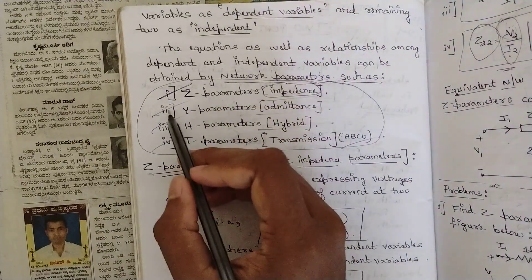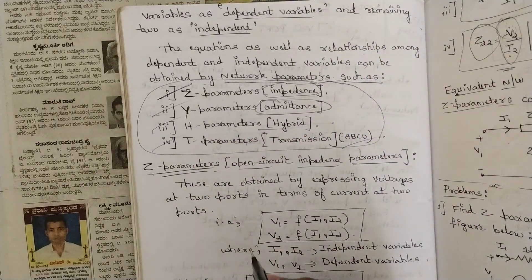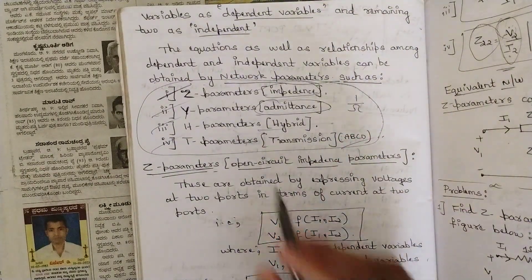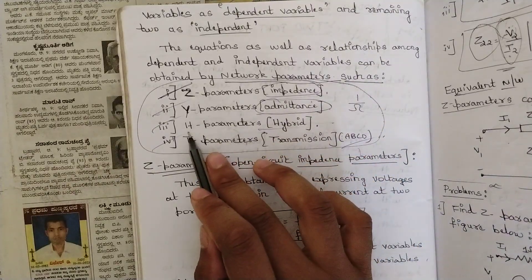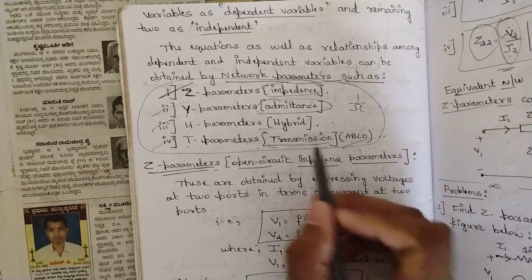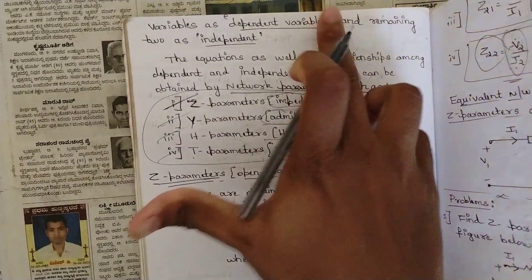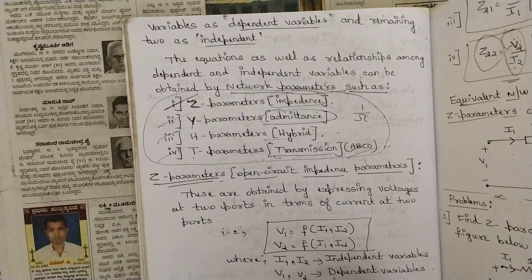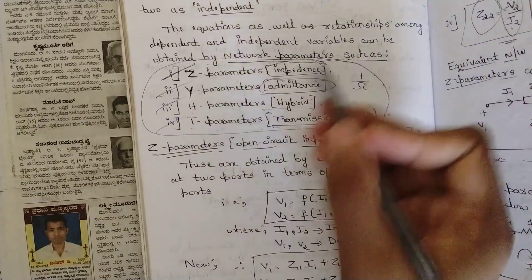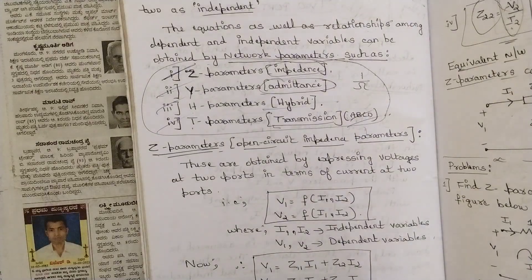The four parameters are: Z parameters, also called impedance parameters; Y parameters, also called admittance parameters — admittance is the reciprocal of resistance; H parameters, also called hybrid parameters; and T parameters, also called transmission parameters or ABCD parameters. The dependent and independent variables are interlinked forming particular relationships defined by these four network parameters.